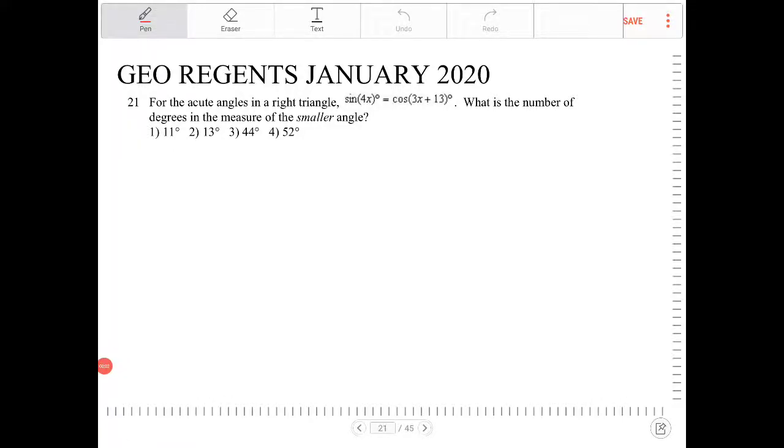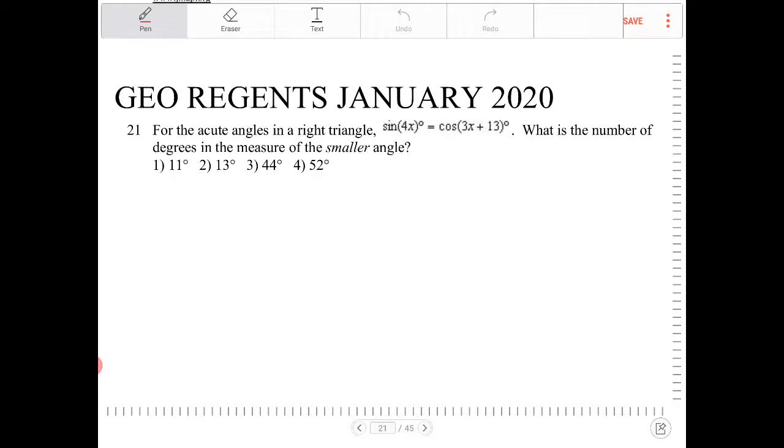For the acute angles in a right triangle, sine of 4x is equal to cosine of 3x plus 13. What is the number of degrees in the measure of the smaller angle? This question is asking whether or not you remember the trig identity for sine and cosine.